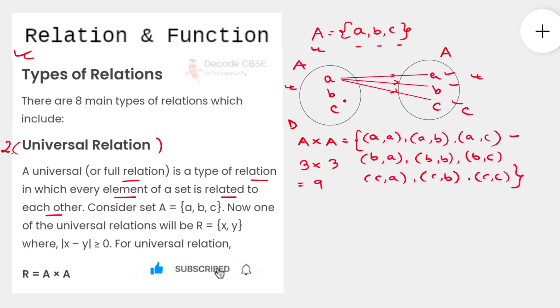So in this case, all the elements—in our case a, b, c—are related to all the elements of itself. Let's say the set A is {a, b, c}, so we'll have a relation where we have ordered pairs (x, y), and suppose the condition for these ordered pairs in this relation is that the modulus of the difference of any two elements is greater than or equal to 0, then it will be a relation.